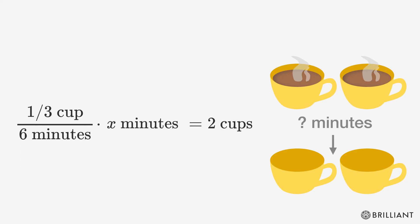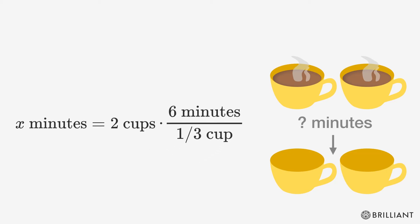Let's multiply by six minutes over a third cup on both sides. Then we can cancel out the cups. Multiply two and six to get 12 minutes. Then multiply by three over three to cancel out the three in the bottom and get 36 minutes on top, which is the answer we're looking for.